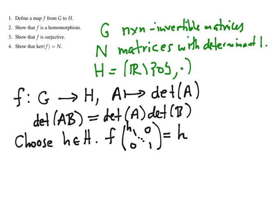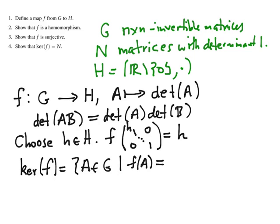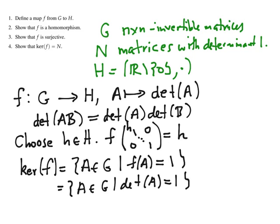Finally, we need to find the kernel of F and show it equals N. By definition, the kernel is all matrices in G such that F of A equals the identity of H, which is 1. Since F of A equals the determinant of A, we're looking for all matrices whose determinant is 1, which is precisely N. Therefore, we conclude that G modulo N is isomorphic to H.